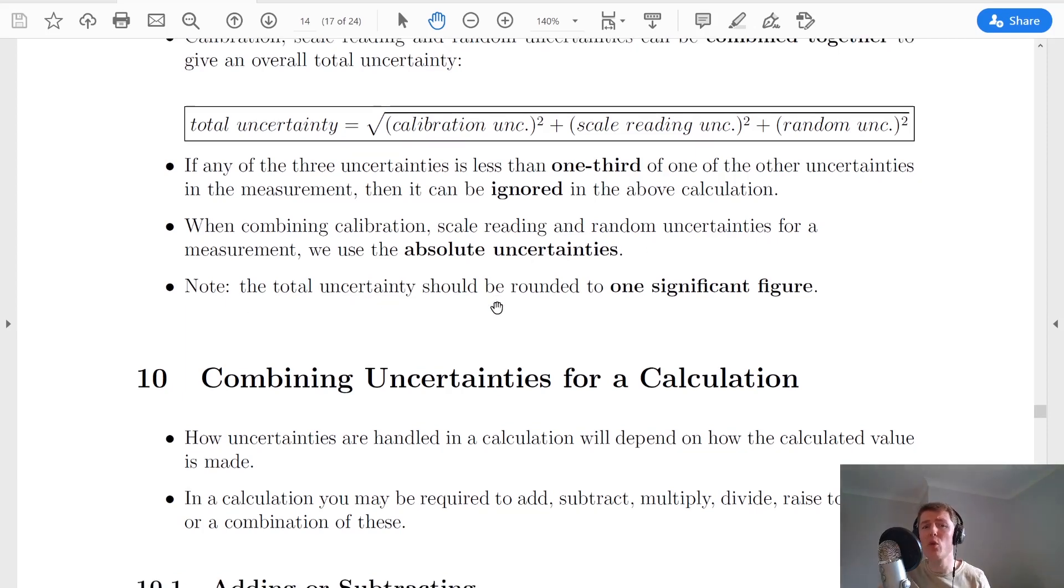Note that the total uncertainty should be rounded to one significant figure. Remember we said earlier that the absolute uncertainties should be rounded to one significant figure or two at a push. This is the same for the total uncertainty.